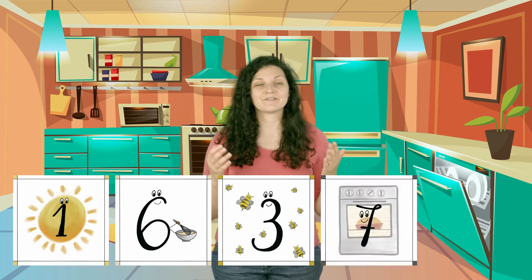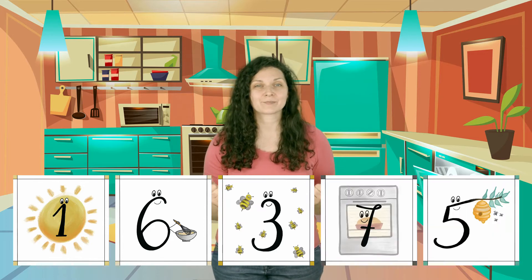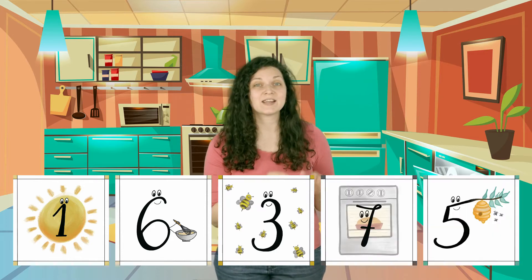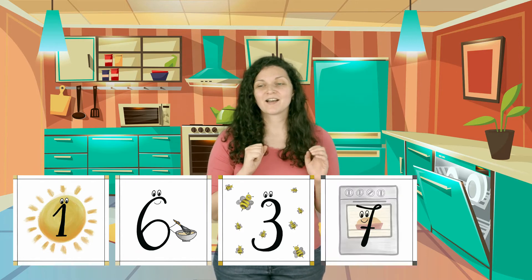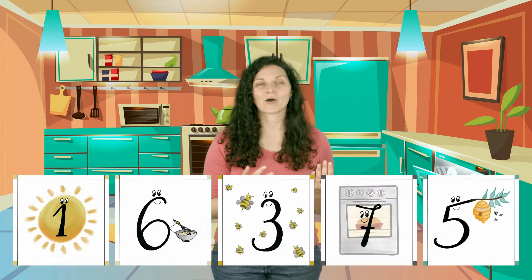So you can read them all together like this: one, six, three, seven, five. Or if it's easier for you, you can say: sun one, mix six, three, oven seven, five. All right, let's continue — can you please read the numbers on your screen?